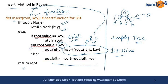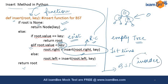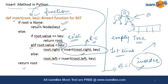Once you are done with the insertion, you can print the binary search tree in an in-order manner. In-order traversal gives you an ascending order output, so you will get a clear idea of whether your binary search tree is correct or not by printing values in in-order.